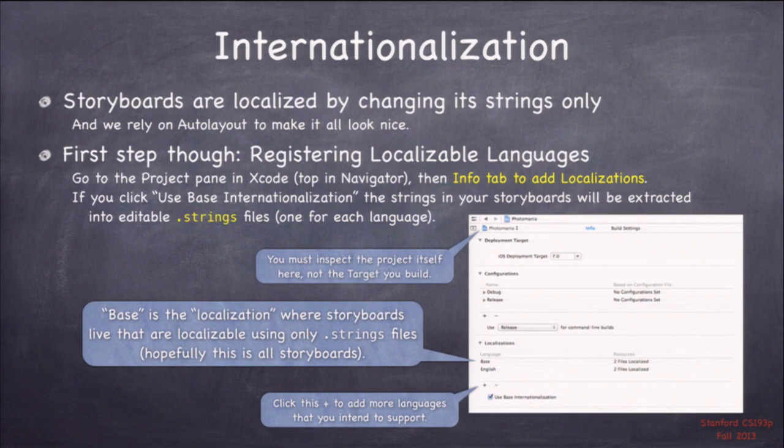You can also see there's a language called base, with a switch that says 'use base internationalization.' The concept of base internationalization is there's going to be a localization that's not in anybody's language — it's just the base. That's where all the defaults go. The default storyboard strings and default strings throughout your app come out of the base localization, and then all the other localizations like English, French, German, etc. modify those strings. If you forget to localize a string, the base localization will shine through.